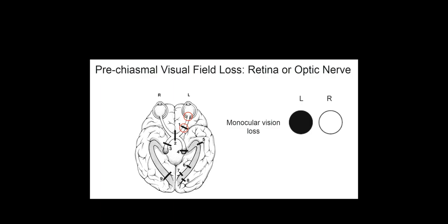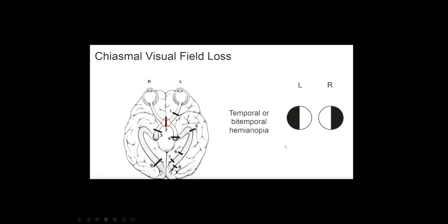Let's go through different lesions along the visual pathway. We want to think about visual loss in terms of either anterior to the chiasm, at the chiasm, or posterior to the chiasm. If we have a lesion anterior to the chiasm — either the optic nerve, optic nerve head, or the retina — then we're going to have monocular visual loss. With a lesion on the left, the patient will lose vision in the left eye.